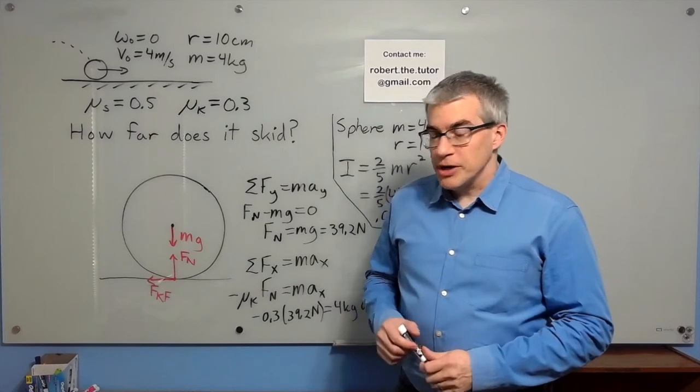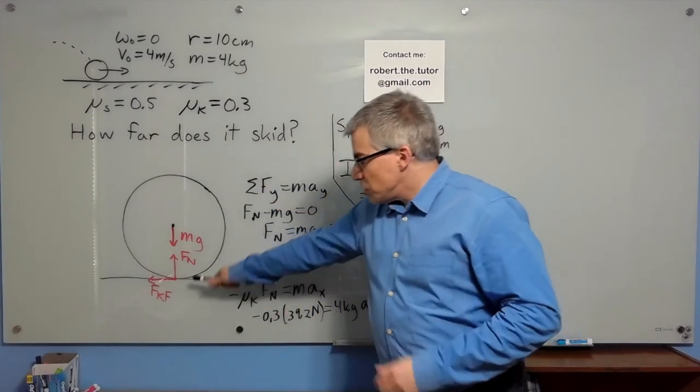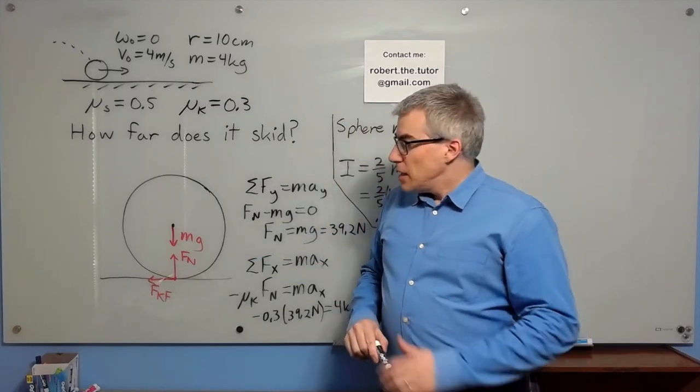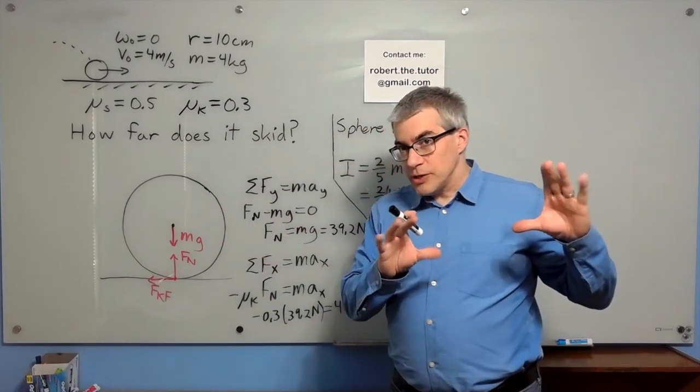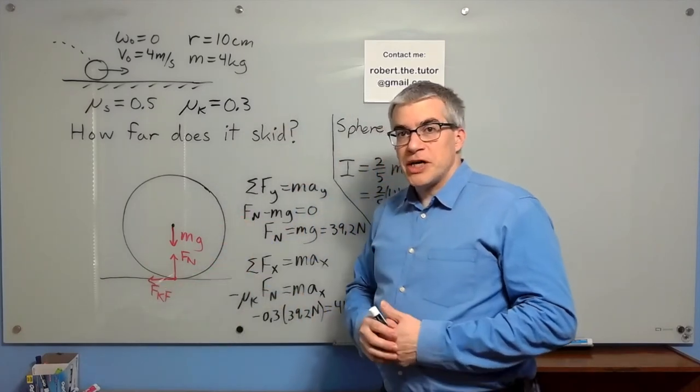Let's start with a force diagram. Gravity acts at the center. It presses on the floor so there's normal force upward at that point of contact. And the ball is scraping, right? So we have kinetic friction trying to slow it down that points to the left. There's our force diagram.